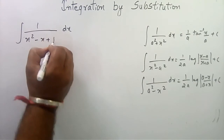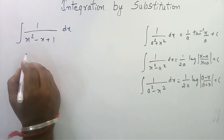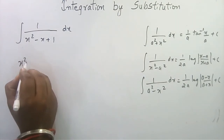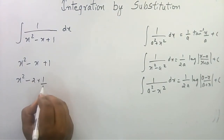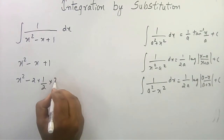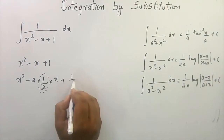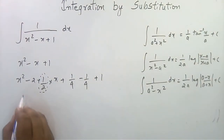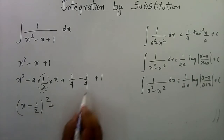Our example is x² - x + 1. We have to write this expression in the standard completed-square form. We rewrite x² - x + 1 by writing the middle term as 2·(1/2)·x, then add and subtract the square of the half-coefficient of x.